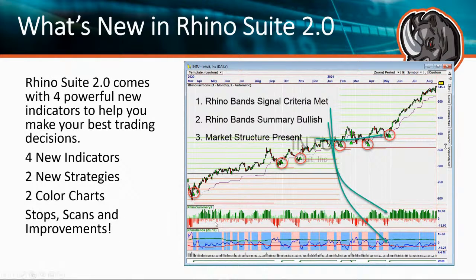I came up with something called the Rhino Summary, which took 16 different indicators — some moving averages, some oscillators — and produced an indicator that helps predict the flowing sentiment of what's going on in the market. We also added the Rhino HMA, which is a variation of the Hull moving average with modified calculations and color treatment. We built the entire suite around these concepts.